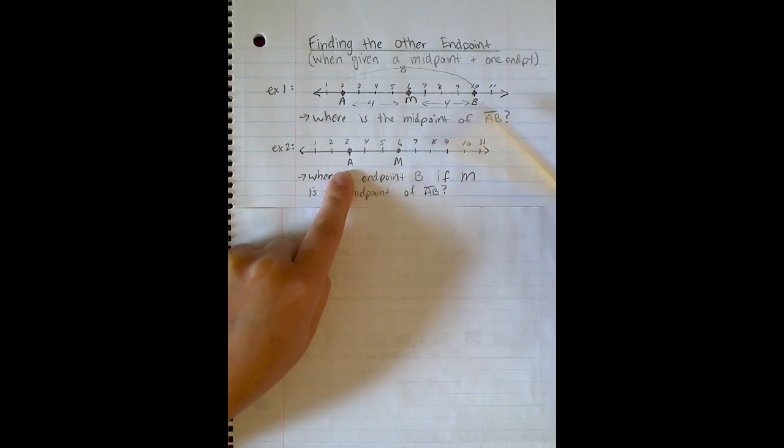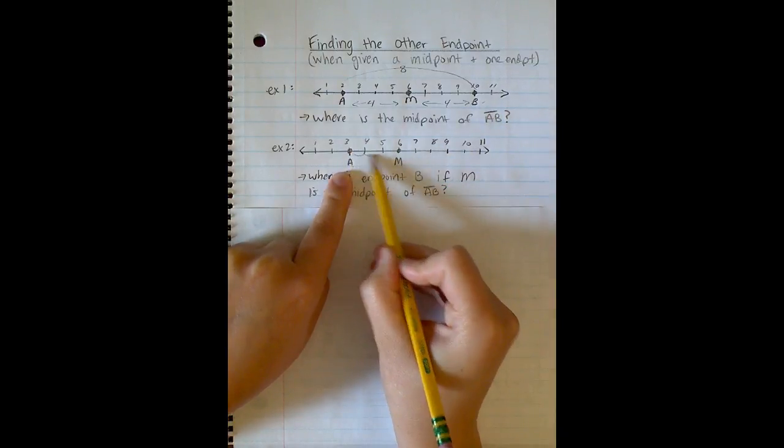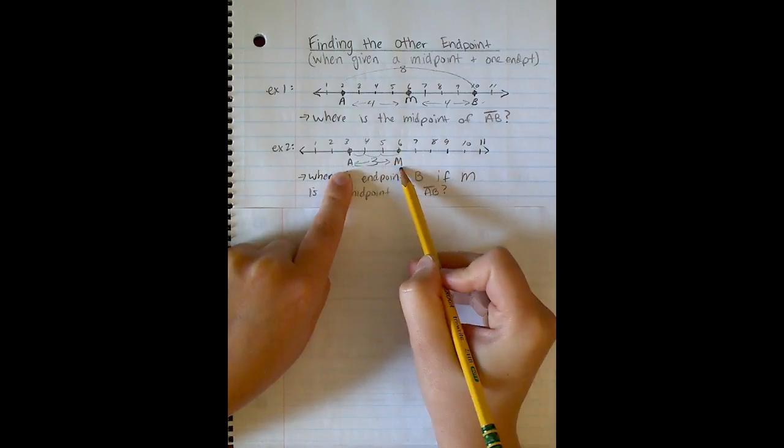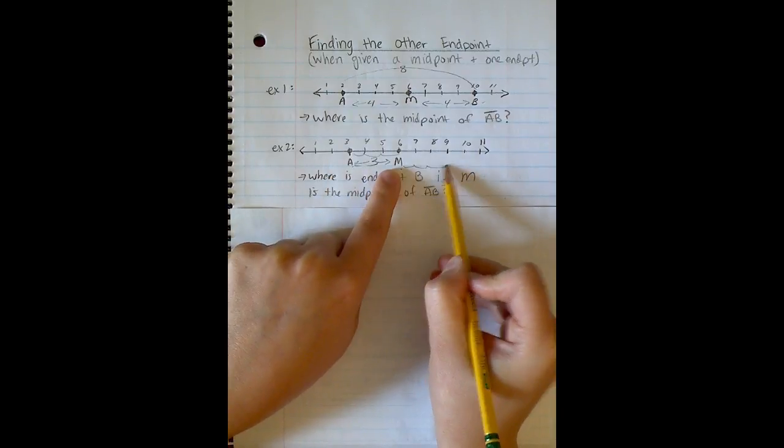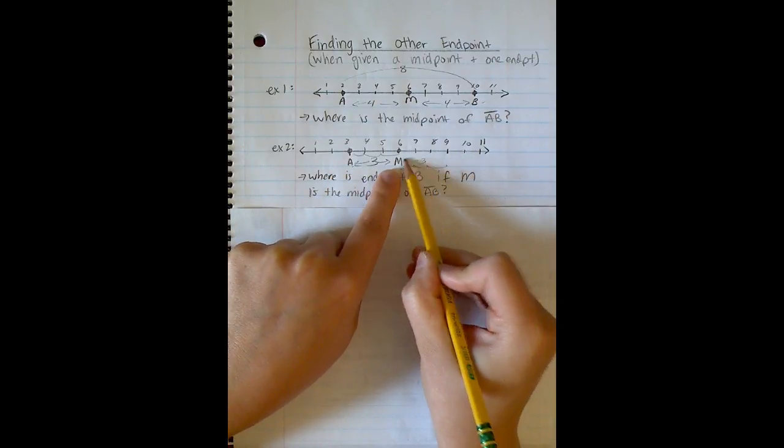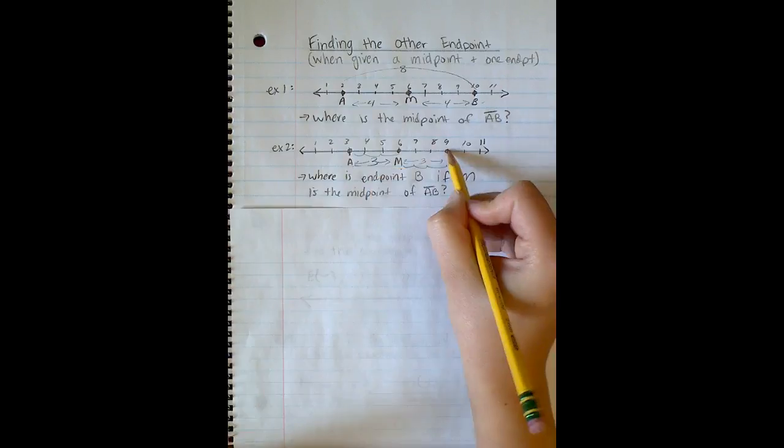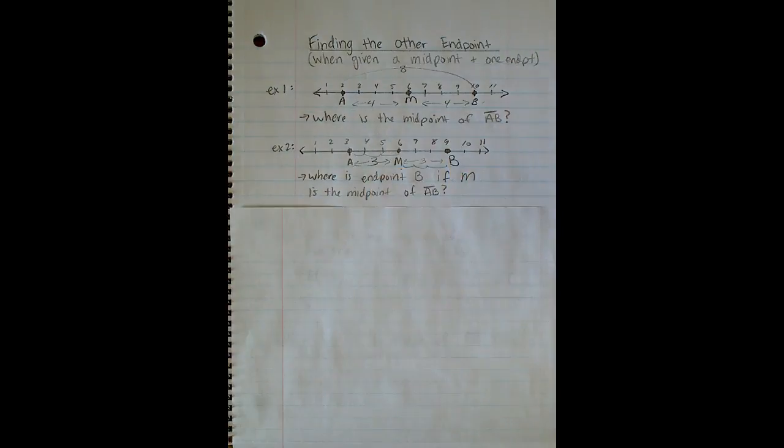So this is 1, 2, 3 units from A to M. So from M to B must also be 1, 2, 3 units. Right? So B must be located at 9.